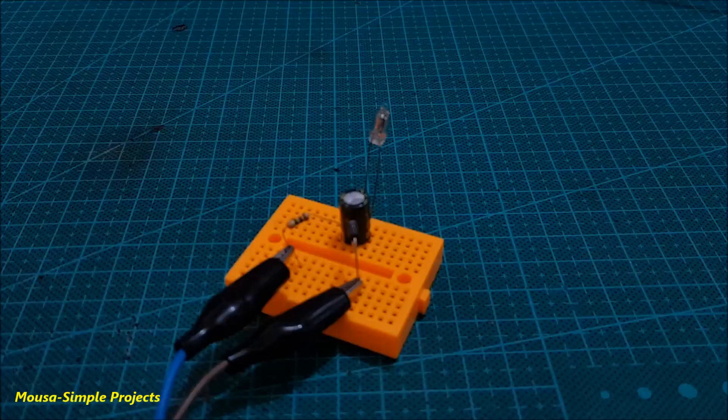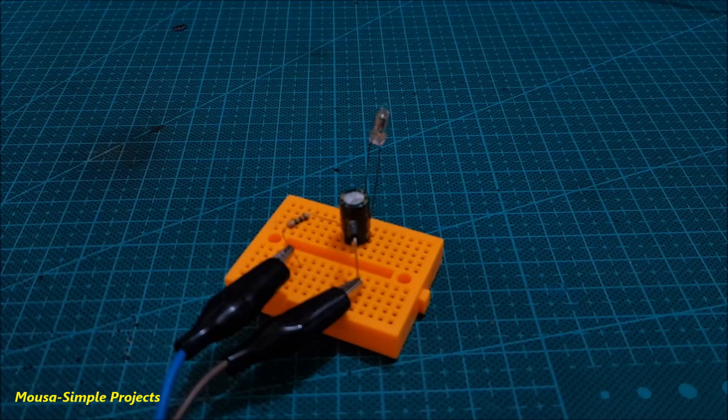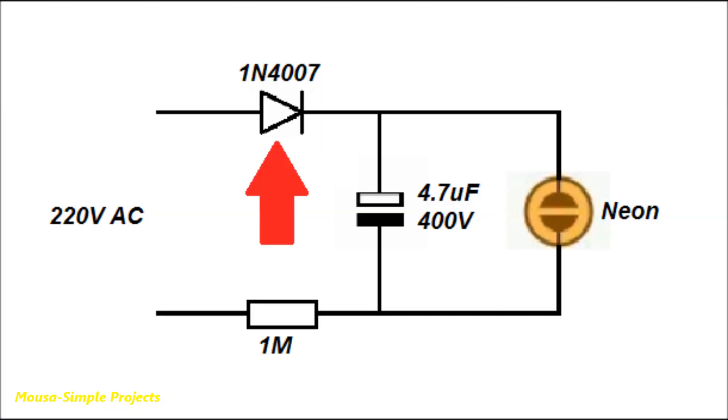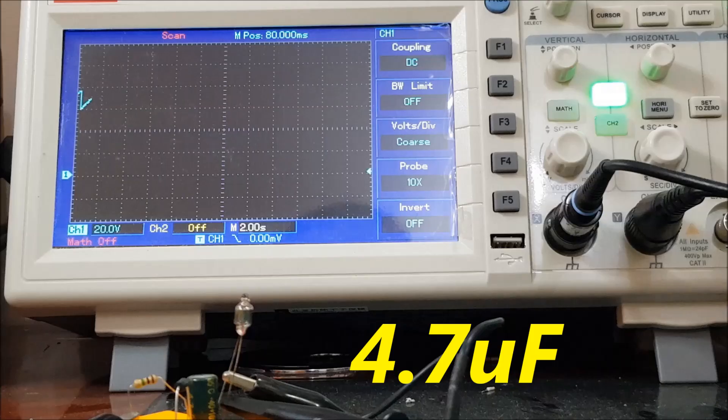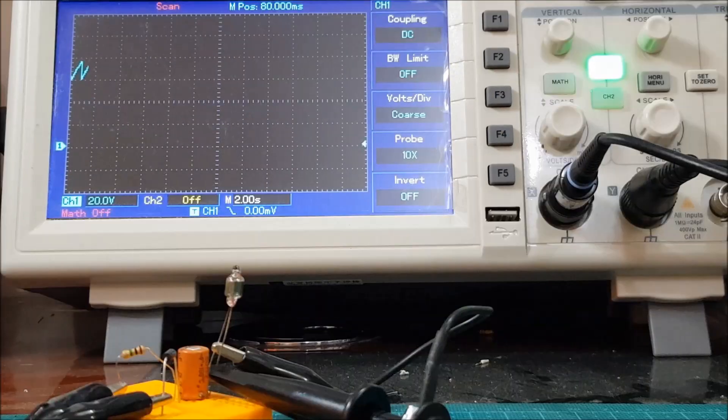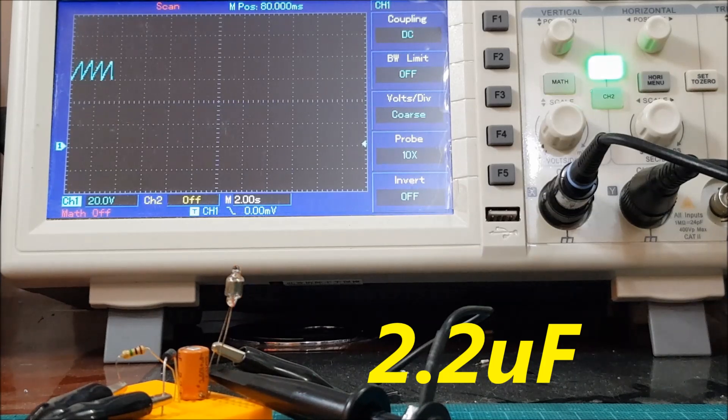I make a simple flasher using the neon lamp. First, this diode converts the AC voltage to DC and charges the capacitor slowly through a 1 megaohm resistor. When the voltage at the capacitor becomes around 80 V, the lamp glows and discharges the capacitor. The capacitor charges again and this cycle repeats. The flashing speed depends on the capacitor value and the resistor.